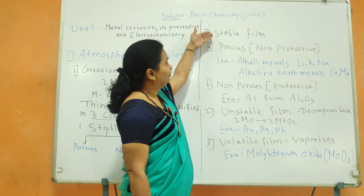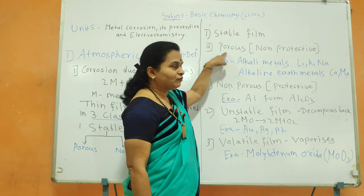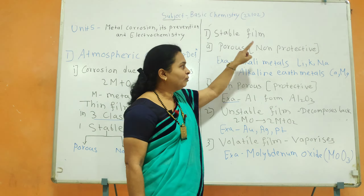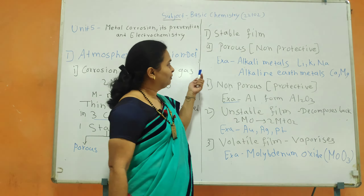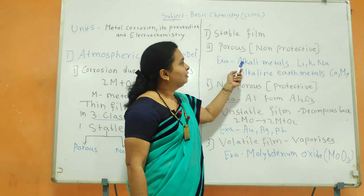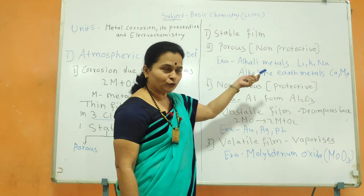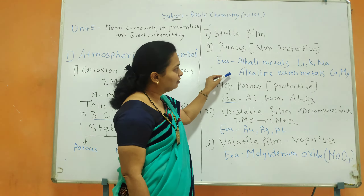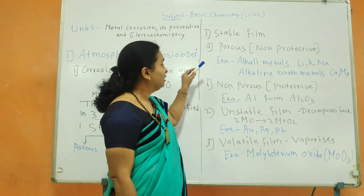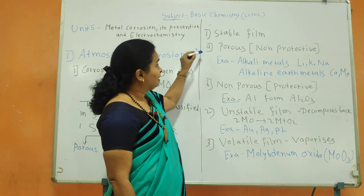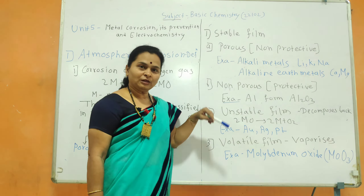Stable film, first type: porous film. It is a non-protective film. For example, alkali metals like lithium, potassium, sodium, and alkaline earth metals like calcium and magnesium form non-protective stable films.